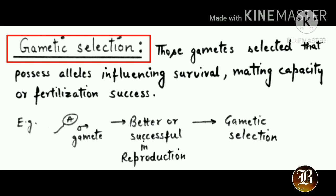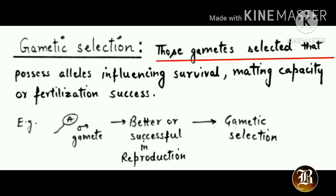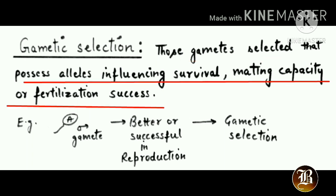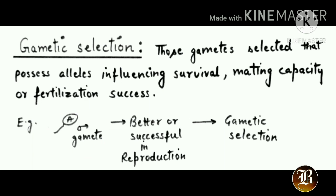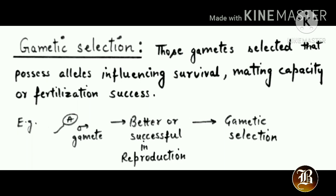The next type of selection is gametic selection. Here those gametes will be selected that possess alleles influencing survival, mating capacity, or fertilization success. That means gametes with alleles showing advantages for the individual will be selected. For example, a male gamete carrying capital A allele — if capital A shows advantages for survival, fertilization, or reproduction, the gamete carrying this beneficial allele will show better reproduction or better mating success, and so this gamete will be selected over others.